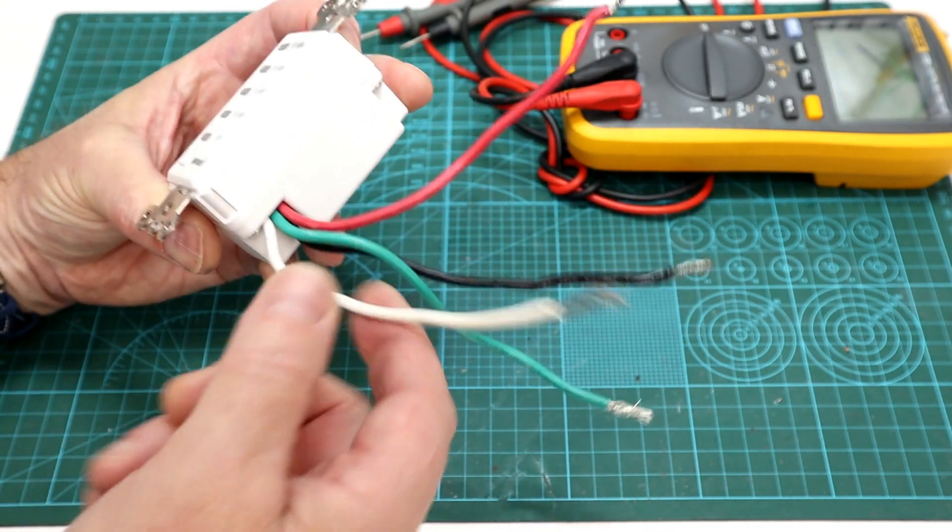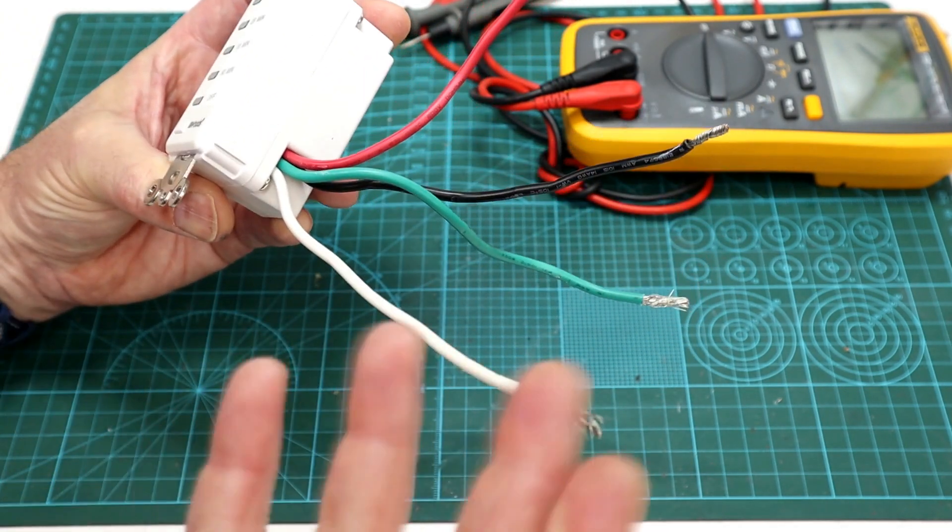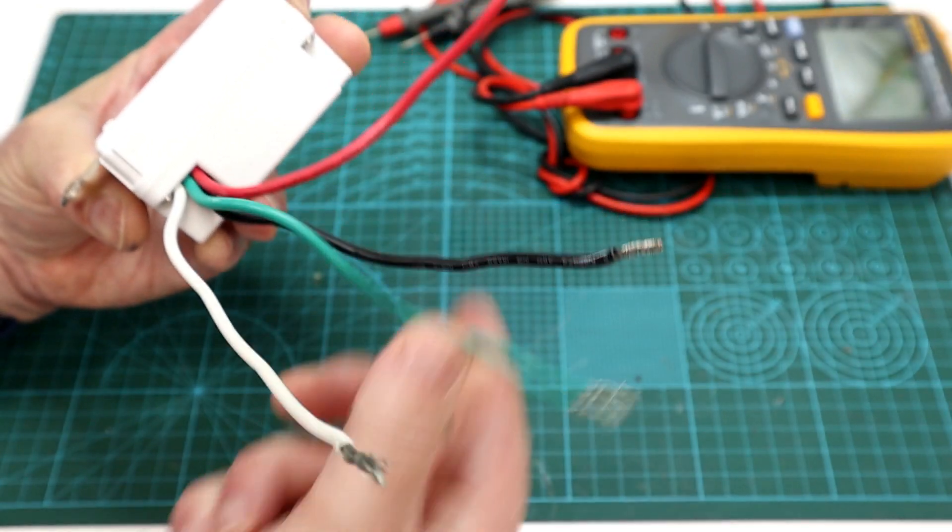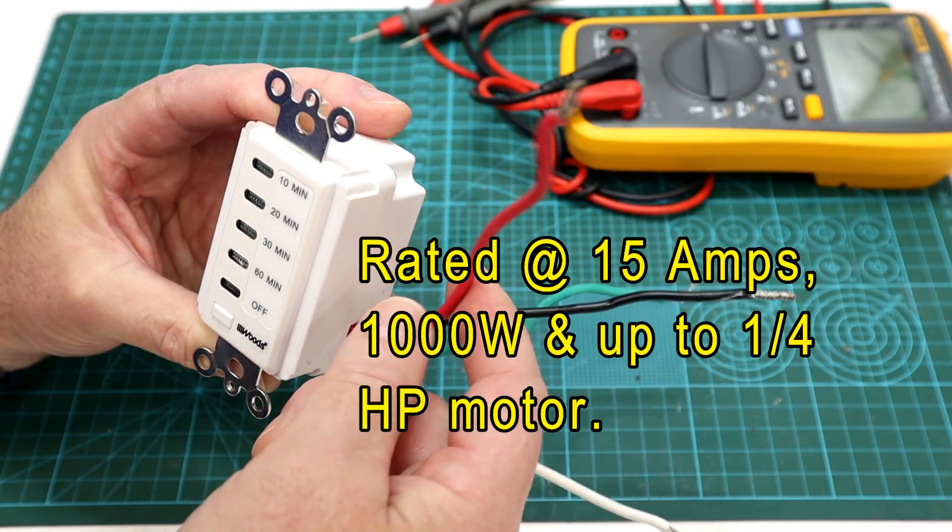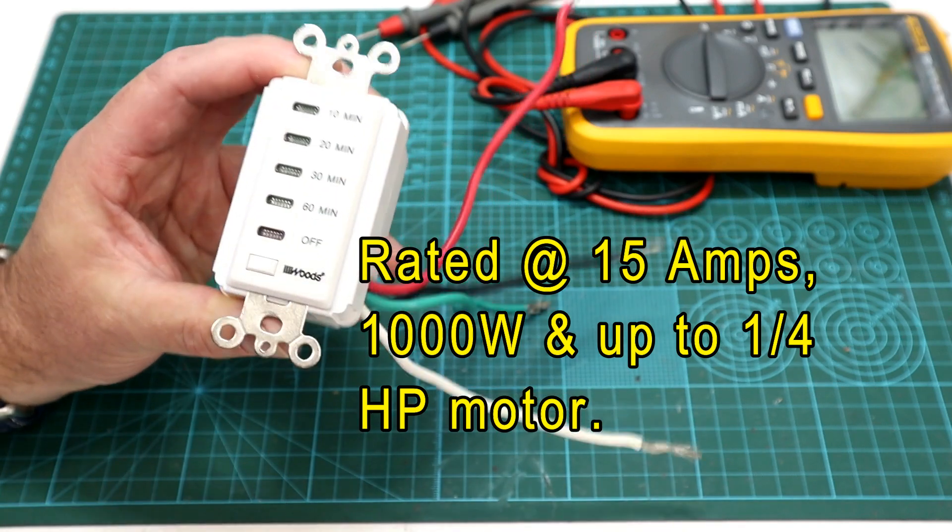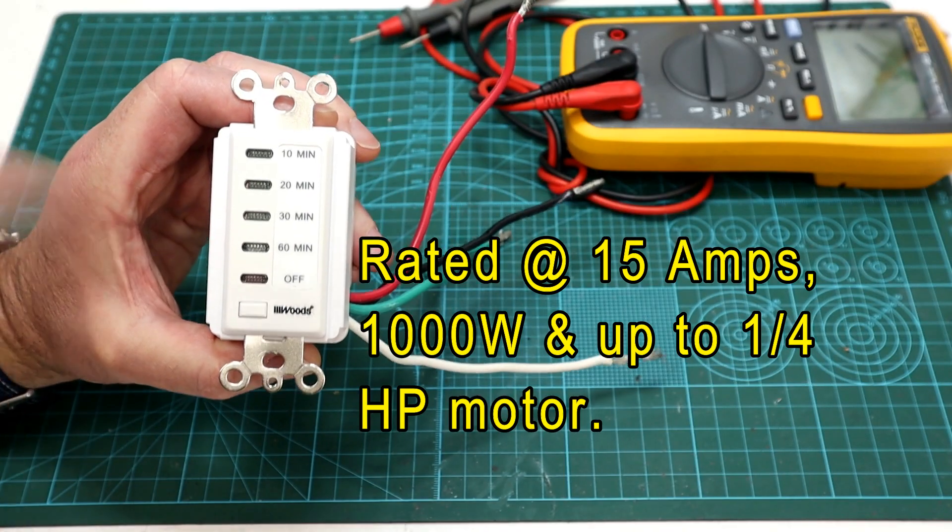These are very easy to wire up. You've got a white neutral that goes to your neutral, of course, a black hot, green ground, and then the red wire is the switched output. These use a little relay, work really well. Let's get into it.